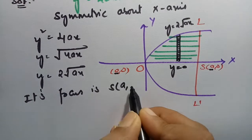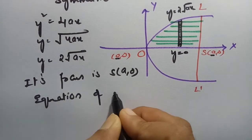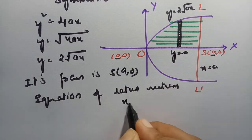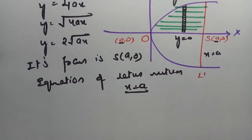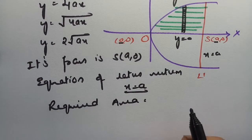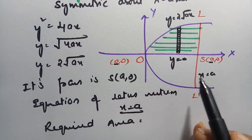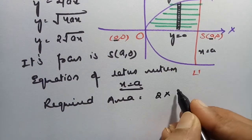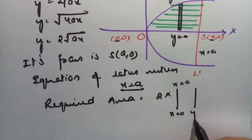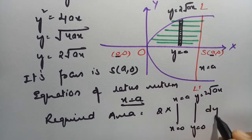The focus is at (a, 0) and the equation of the latus rectum is x = a. The required area is obtained by integrating over half the parabola and multiplying by 2 to get the total area enclosed by the parabola and latus rectum. That gives: Area = 2 × ∫∫ (x=0 to a, y=0 to 2√(ax)) dy dx.